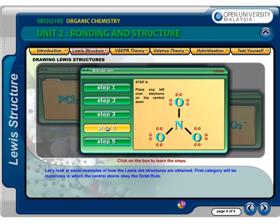Step 4: Place any leftover electrons on the central atom. This gives us 18 electrons from the oxygen atoms, plus 6 electrons from the single bonds, giving a total of 24 electrons.